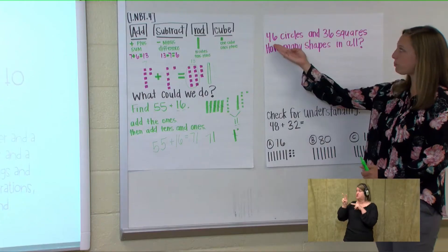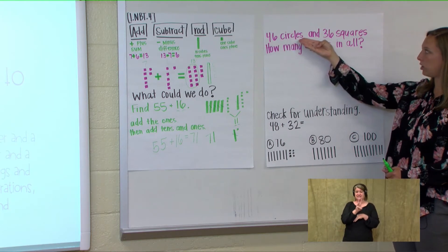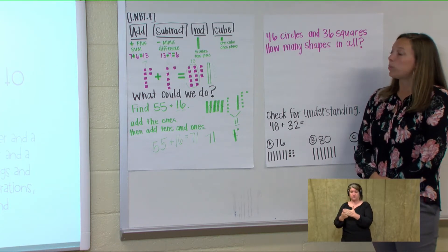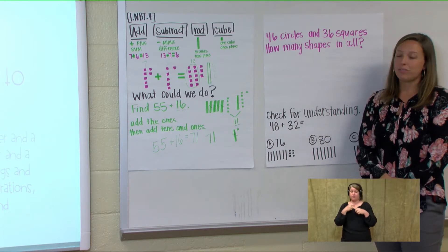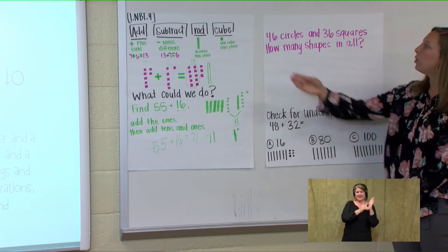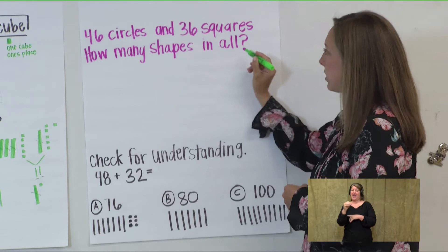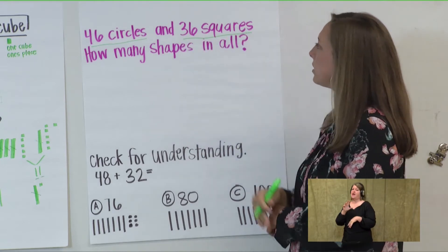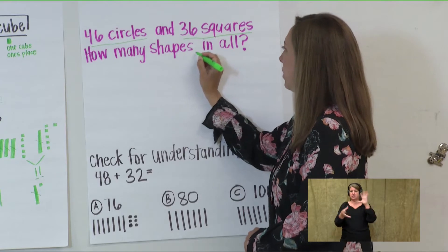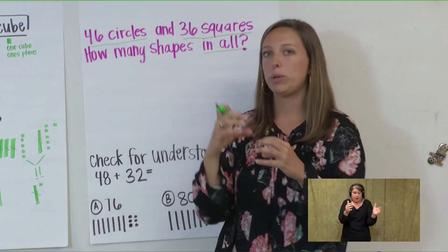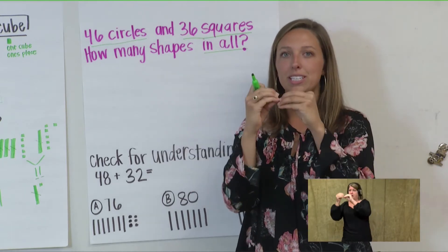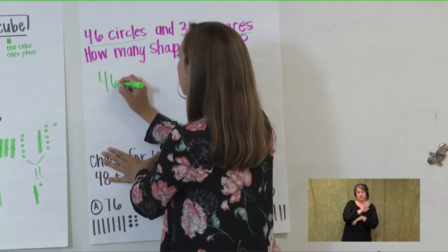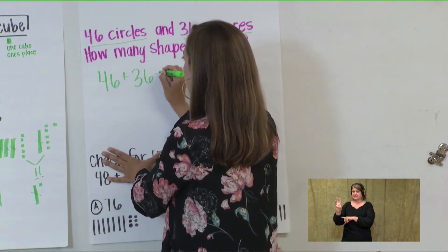Let's take a look at this one. You have 46 circles and 36 squares. How many shapes in all? When we have our word problem, remember we need to underline the important information. 46 circles and 36 squares — how many shapes in all? In all means we're bringing them all together, which means you're adding. So you use your plus symbol. We're going to say 46 plus 36 gives us the sum.